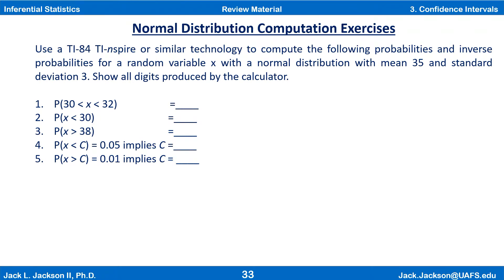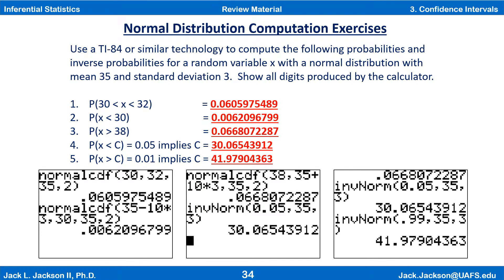Now it's time for you to practice. Use a TI-84, TI-Nspire, or similar technology to compute the following probabilities and inverse probabilities for a random variable x with a normal distribution with mean 35 and standard deviation 3. Show all digits produced by the calculator. Work these five problems yourself, then come back and check your answers against the next slide. Press pause now. Here are the answers along with screenshots of the calculations using a TI-84.